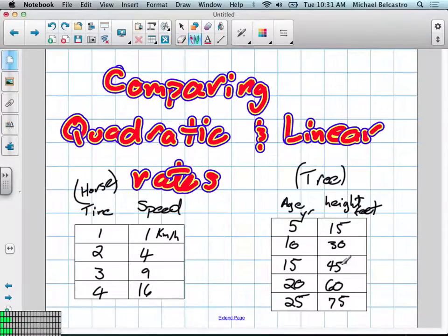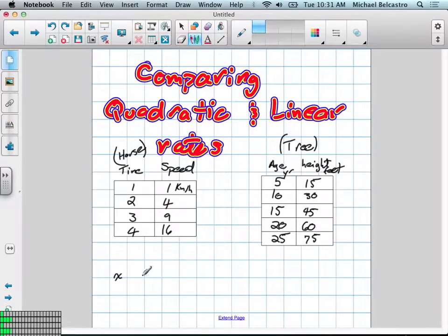First thing we need to make sure is whenever we're comparing this, we need to find out an independent and a dependent variable. So what we mean by that is normally what we do is, especially if we're going to graph something, we call the independent variable x, so x is independent. And our y is dependent.